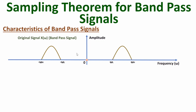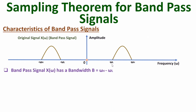Here you can observe we have the original band pass signal, having a higher cutoff frequency and a lower cutoff frequency. If the frequency is greater than the higher cutoff frequency, the response is zero. And if the frequency is lower than the lower cutoff frequency, the response is also zero. Here we also have a negative replica. So with band pass signals, bandwidth will be omega H minus omega L. And based on this bandwidth, one can understand the sampling theorem for band pass signals.